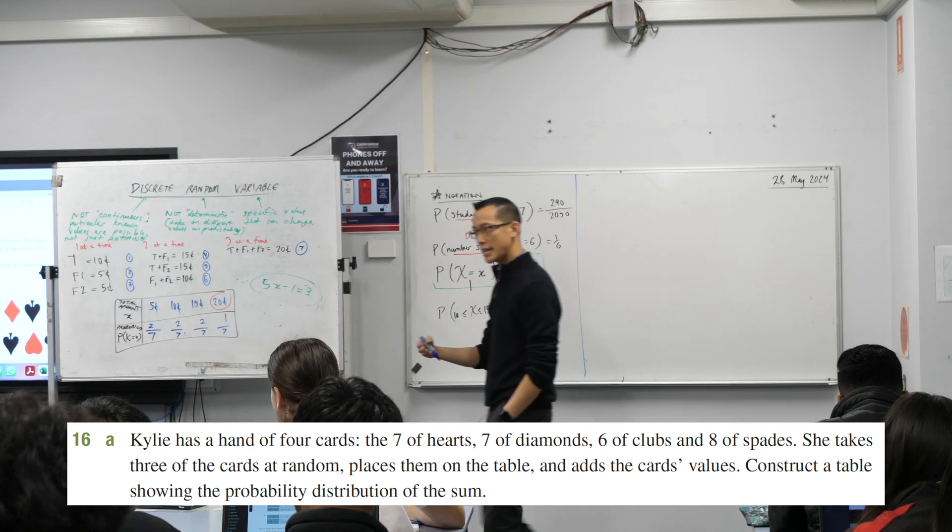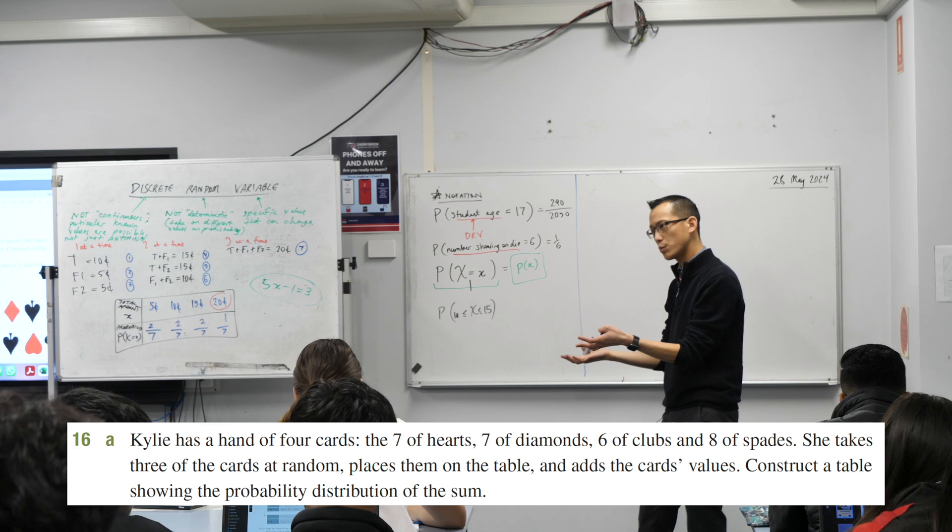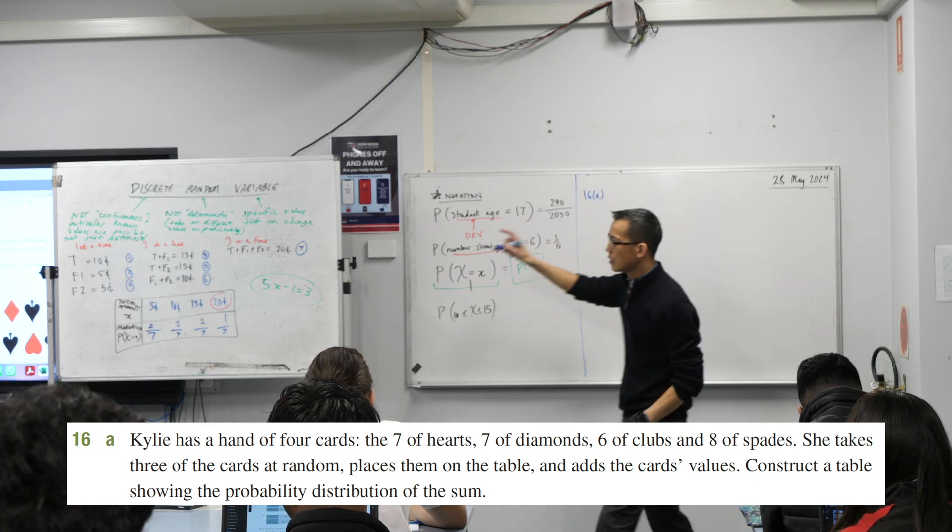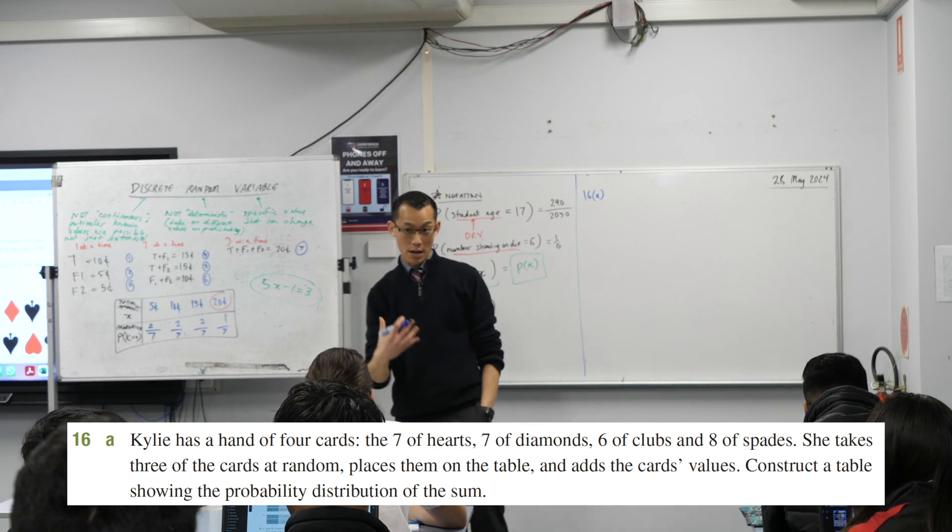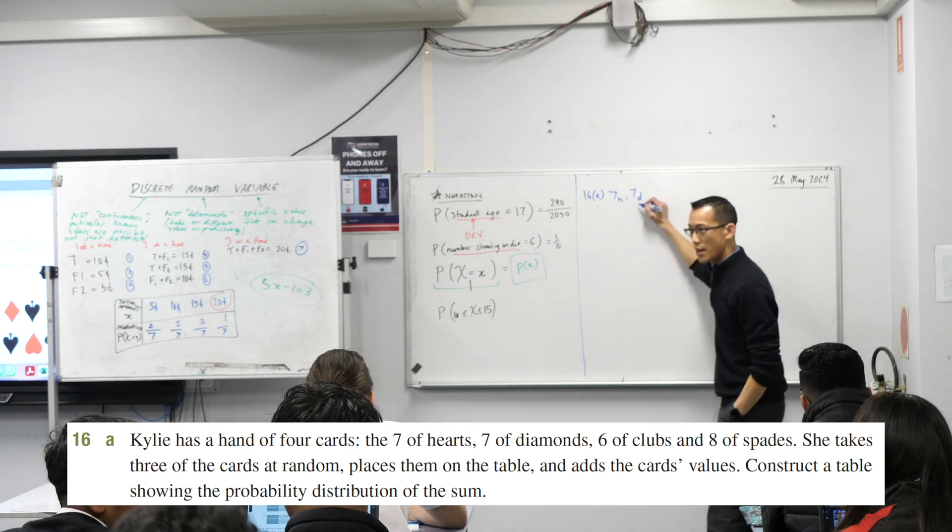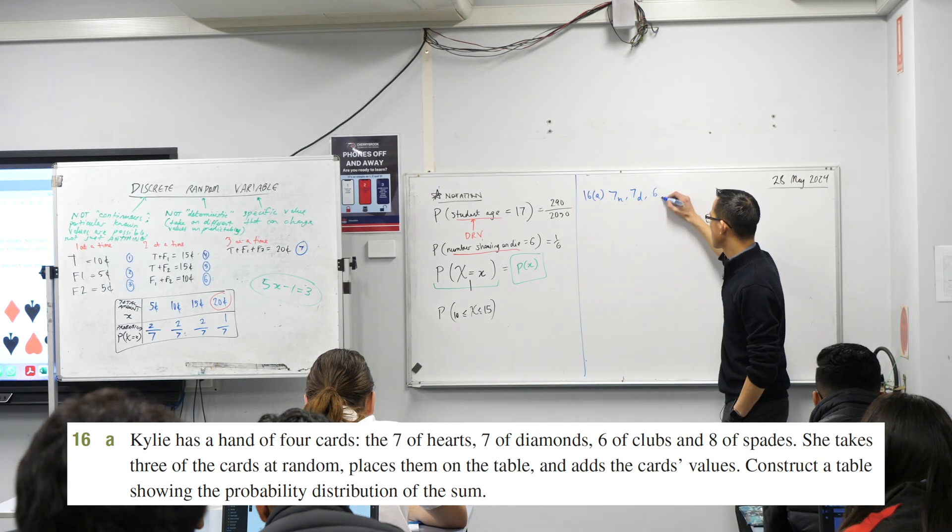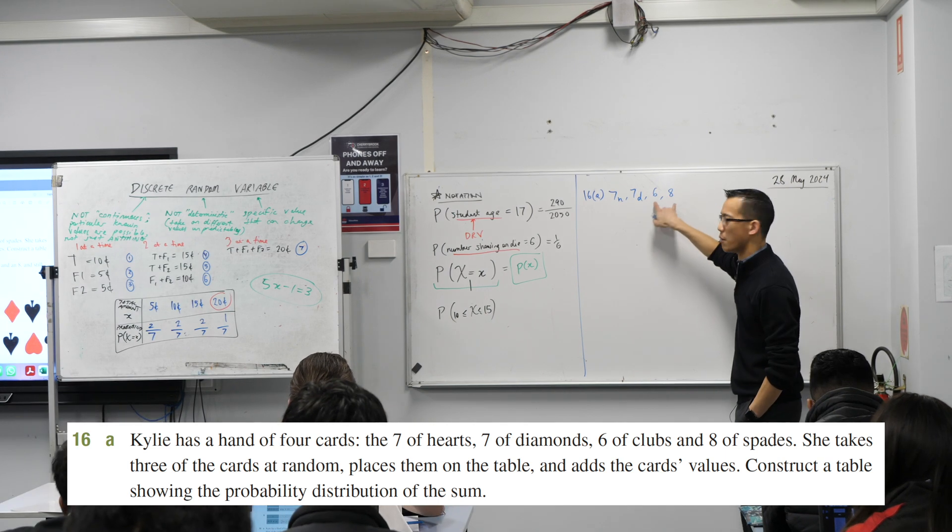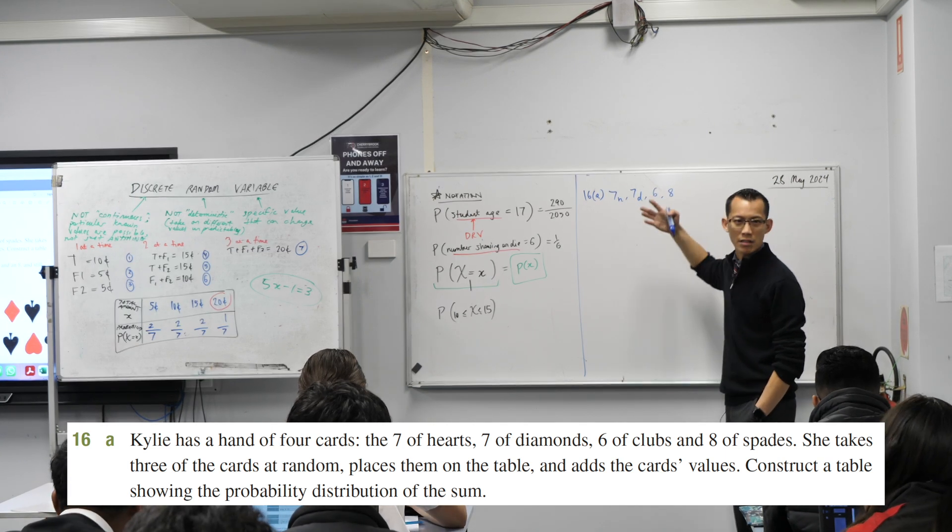Before we go any further, let's just note down, this is kind of like your sample space, right? So I'm going to write down, this is question 16A, because she has two different kinds of sevens. I'm going to call this seven of hearts, seven of diamonds, and then I believe she's got some six and some eight, but she doesn't have any more sixes or eights, so I'm not going to bother describing those in their suit.